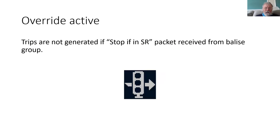With the override active — indicated by the symbol shown on the screen — trips are not generated if the train receives a stop if in SR packet from a Balise group. Or if it's been told a list of Balises it can pass over, it won't trip if it finds a Balise not in that list. So the override active is indicated on the screen.